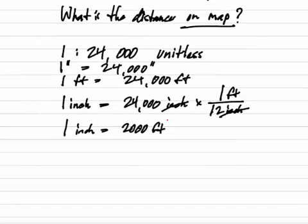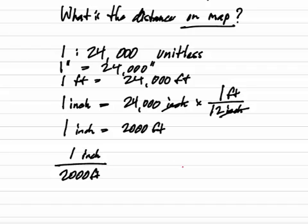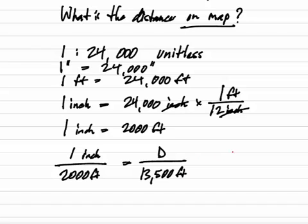If that's the case, I can simply say that 1 inch on the map equals 2,000 feet on the ground. That's my map scale, and I want to find what is the distance D on the map when the ground distance is 13,500 feet. All I've got to do is the math, and if I solve for D, D is going to be 6.75 inches.